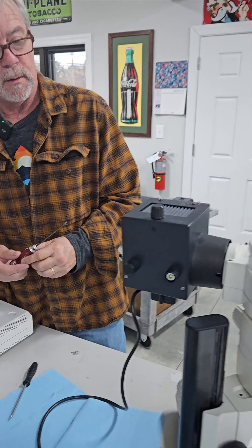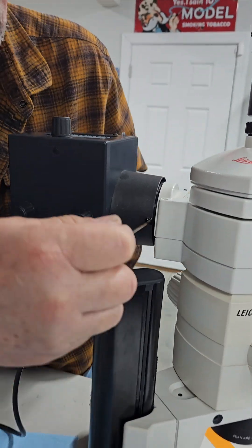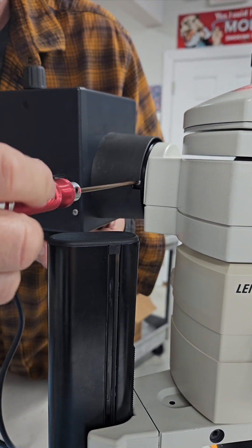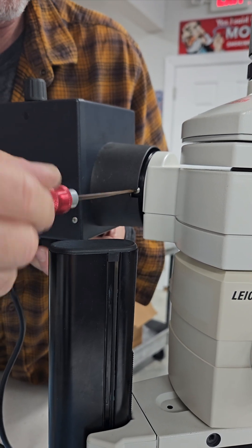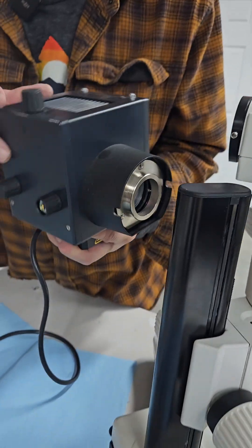Here's the mercury lamp house. There's a three millimeter Allen screw in here. Loosen that, remove the lamp house.